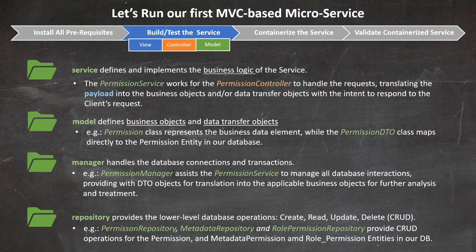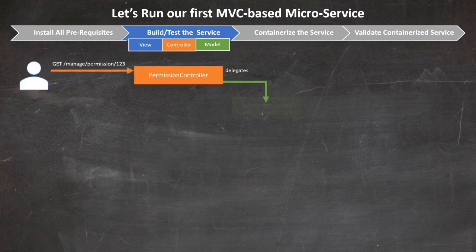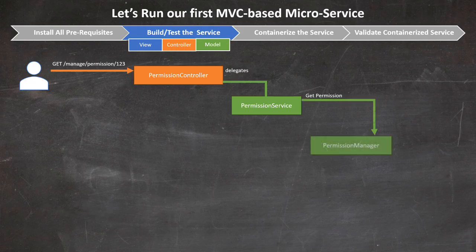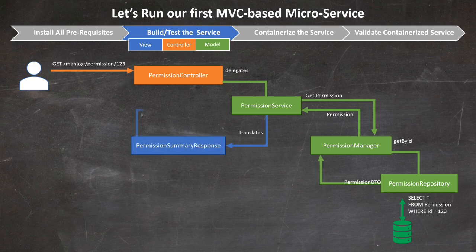Let's see how all these different classes interact together to respond to a user request. Starting with a user requesting information about permission 123: the request is routed to the permission controller, which delegates it to the permission service. The permission service asks the permission manager to get the requested permission. The permission manager works with the permission repository to retrieve from the database the permission with ID 123. The permission repository instantiates a permission DTO object and passes it to the permission manager, which translates it into a permission business object. The permission service then translates it into a payload the client will understand, passing the response back to the controller.